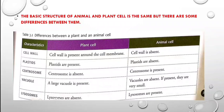Cell wall. In a plant cell, the cell wall is present around the cell membrane. We can say that there are two membranes in the plant cell — one is the cell wall and one is the cell membrane. On the other hand, in an animal cell, the cell wall is absent.